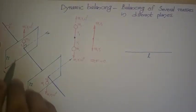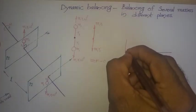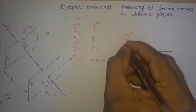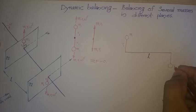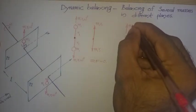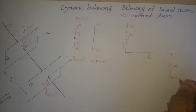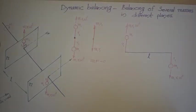Taking the side view, at the left end is plane 1, where mass m1 is placed vertically upward at radius r1. At the other end is plane 2, where the same mass m1 at radius r1 is placed vertically downward. The centrifugal force at plane 1 is m1 r1 omega squared upward, and at plane 2 it is m1 r1 omega squared downward — the forces are balanced.